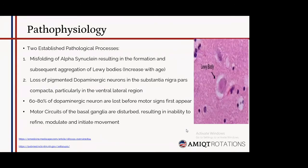The pathophysiology of Parkinson's involves two established mechanisms. One is the misfolding of alpha-synuclein, resulting in formation and aggregation of Lewy bodies — a risk that increases with age. The other is the loss of pigmented dopaminergic neurons in the substantia nigra pars compacta, particularly in the ventral lateral region. Around 60 to 80 percent of dopaminergic neurons are lost before motor signs appear. This disturbs the motor circuits of the basal ganglia, resulting in an inability to refine, modulate, and initiate movement. Lewy bodies are a common feature visible in affected tissue.